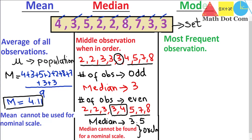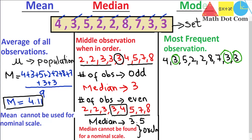A frequency distribution table makes it easy to find the mode by showing how many times each observation occurs. However, with a very small data set, we can find it directly. Looking at the data, the observation repeating most frequently is 3, which appears 3 times — its frequency is 3. So the mode of this data set is 3.